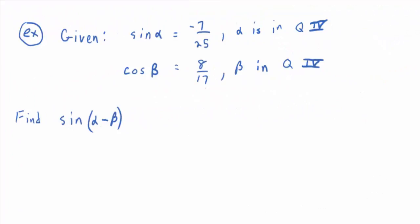Given sine of alpha equals negative 7/25 with alpha in quadrant 4, and cosine of beta equals 8/17 with beta in quadrant 4, find sine of alpha minus beta. We don't know alpha or beta directly, so we can't plug in directly. First, use the difference identity: sine of alpha minus beta equals sine alpha cosine beta minus sine beta cosine alpha. This tells us what we need to find.